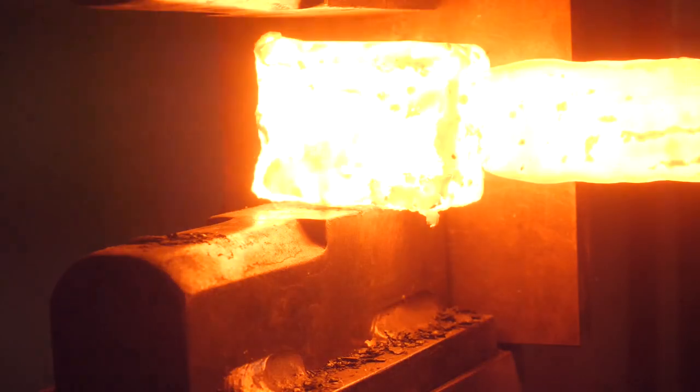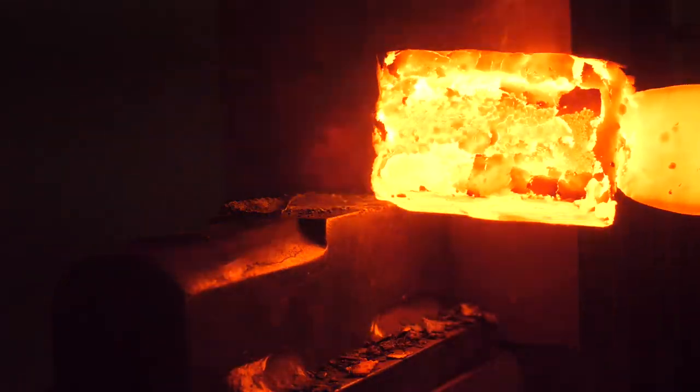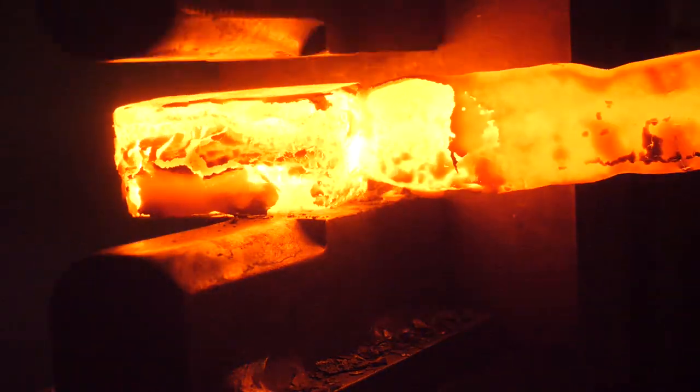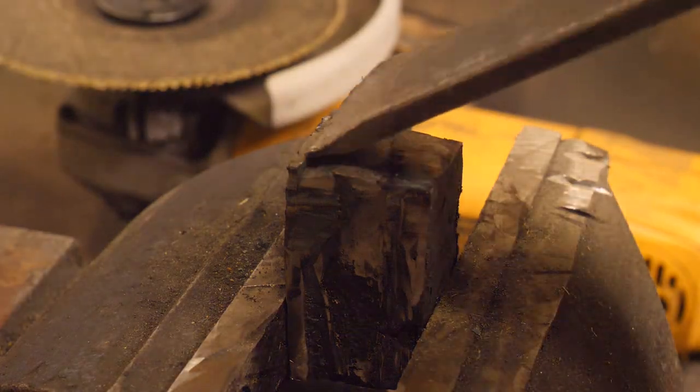We're going to build a canister to go around our new billet. The canister will keep all the oxygen out, which will assist in forge welding stainless steel, which can be difficult to do without toxic fluxes.